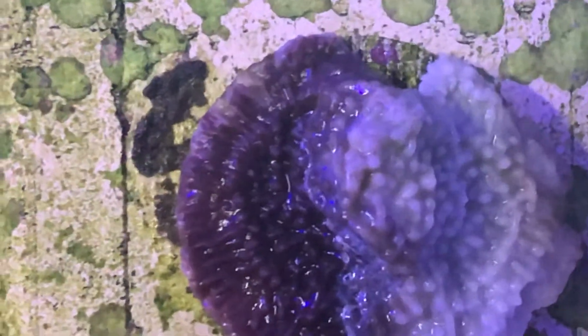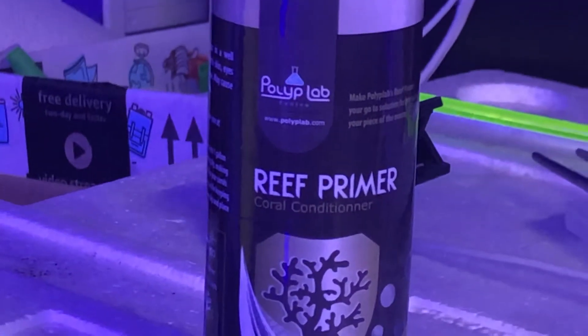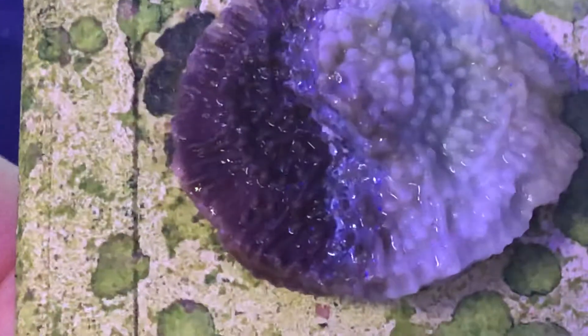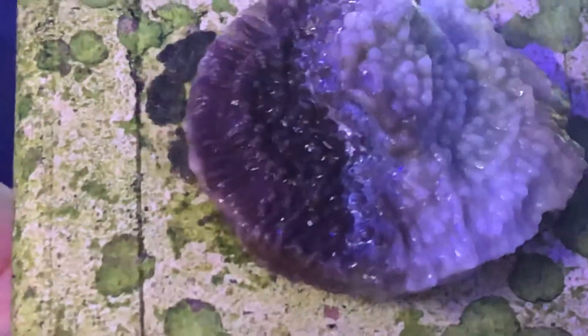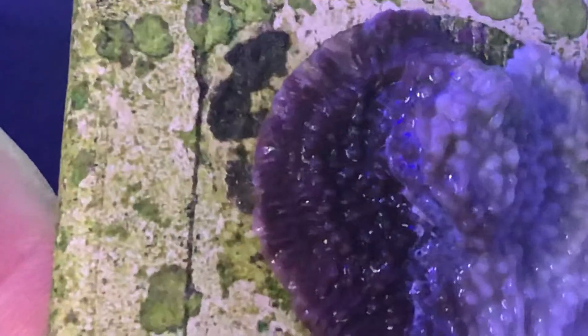So this is an RTN-ing monopora that was treated at the shop by the shop owner who owns this piece. He used the product at the shop that he had. One thing I've noticed about this product is it does not kill the RTN parasites at all, but it actually creates a milky white web over the coral.